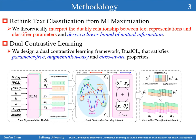To tackle this problem, we theoretically interpret the duality relationship between text representations and classifier parameters, and derive a lower bound of mutual information.